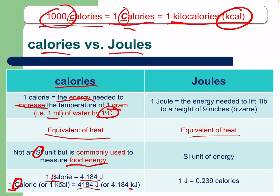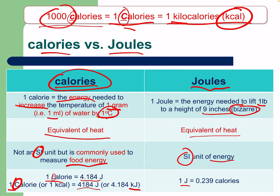One joule is the energy needed to lift one pound to a height of nine inches — a bizarre example, but that's how it was determined. Joules are the standard international unit of energy, used in physics, electrical engineering, and so on. One joule equals 0.239 calories.